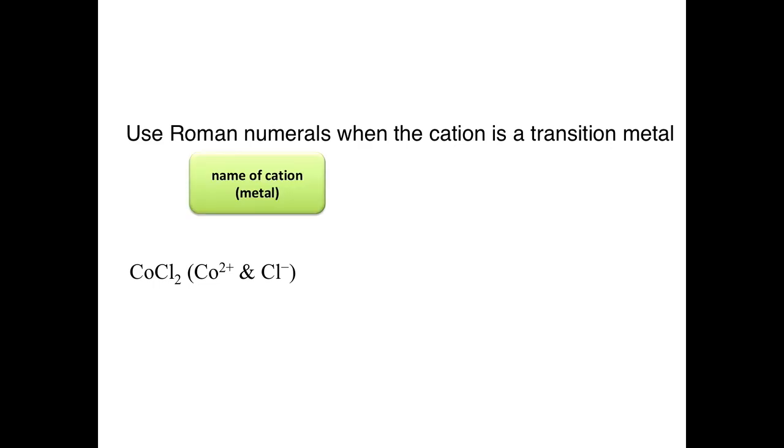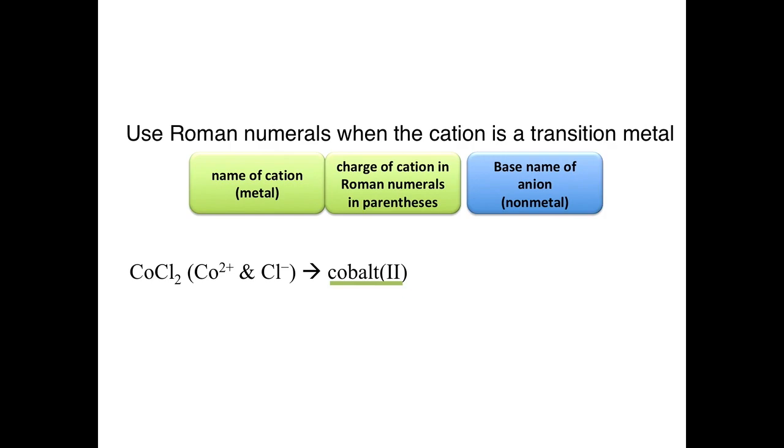So to name it, you simply again give the name of the metal. In this case, it's cobalt. Next, you want to put the charge of that cation in parentheses in Roman numerals. In this case, it is Roman numeral 2. And then the rest of the name is nothing new. You put the base name, which is chlor, and then end it with ide. So this is cobalt(II) chloride.